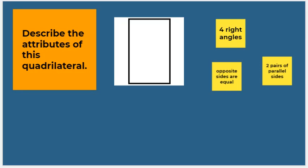We already know it has four sides. We know it has four right angles, opposite sides are equal, and two pairs of parallel sides. So this actually is a rectangle.